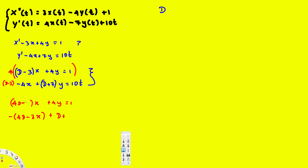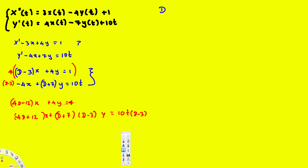So the first equation becomes (4D minus 12)x plus 4y equals 1. For the second equation, D times negative 4x gives negative 4D times x, and negative 4 times 3 gives positive 12, so it becomes (negative 4D plus 12)x. And multiplying the y side by (D minus 3) gives (D plus 7)(D minus 3)y equals (D minus 3) times 10t. Also, multiplying the right side by 4 gives 16y with a factor of 4.